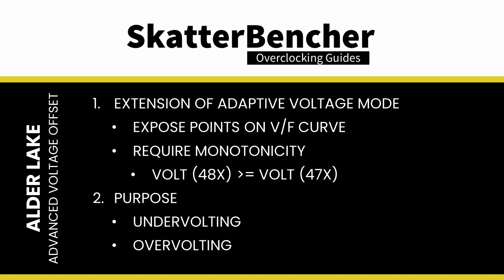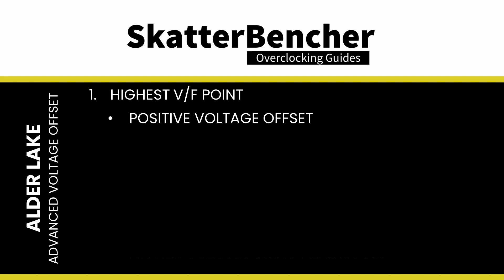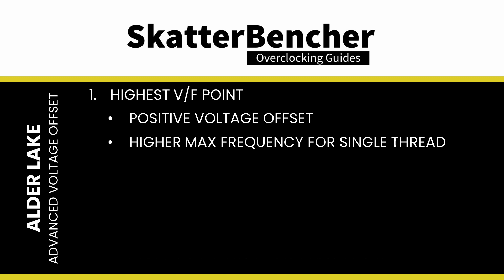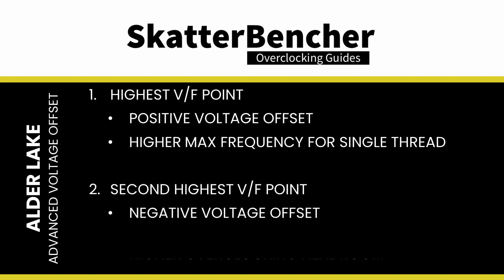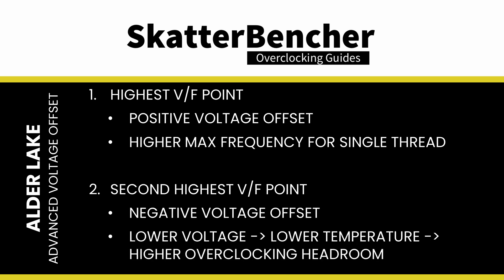The Advanced Voltage Offset function is commonly used in two ways. One: to configure a positive voltage offset for the highest VF point, which helps achieve a higher single-threaded boost frequency. Two: to configure a negative voltage offset for the second highest VF point, which helps achieve lower voltage for the all-core boost, resulting in lower temperatures and potentially additional overclocking headroom. On Alder Lake, this approach is a bit trickier than on Rocket Lake because the Advanced Voltage Offset feature is a little more complicated.